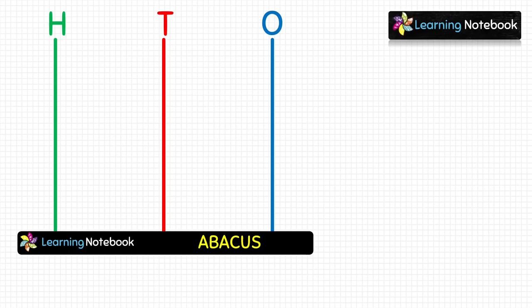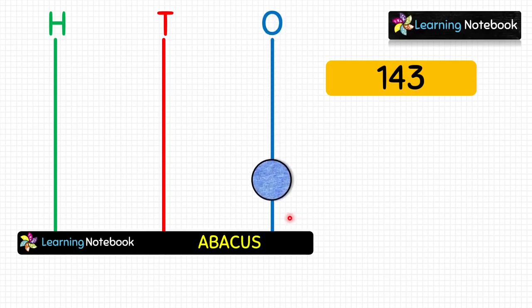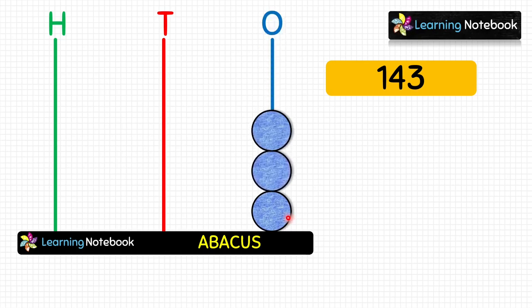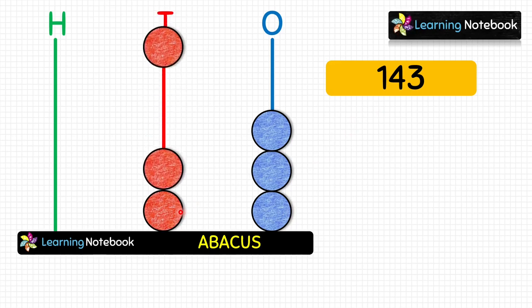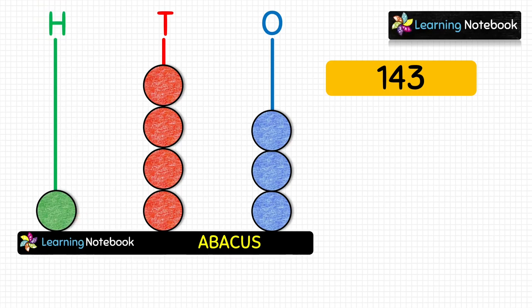Now let's take a three-digit number and represent it on this abacus. The question is to represent 143 on the abacus and write its place value, expanded form, and number name. Digit at ones place is 3, so let's place three blue coins at the ones spike. Digit at tens place is 4, so let's place four red coins at tens place. Digit at hundreds place is 1, so let's place one green coin at the hundreds spike.